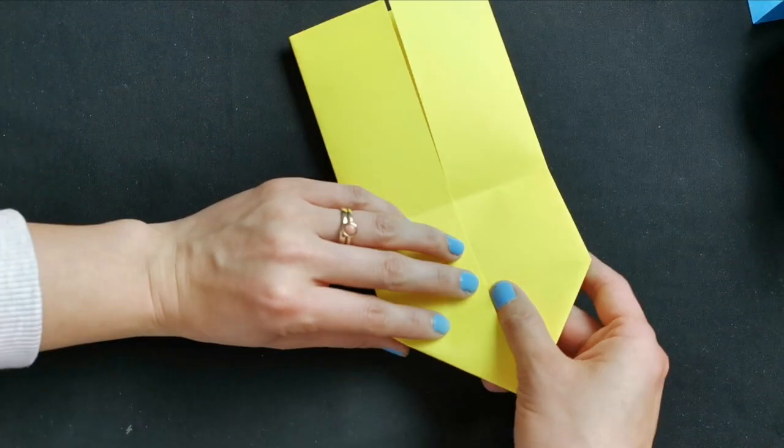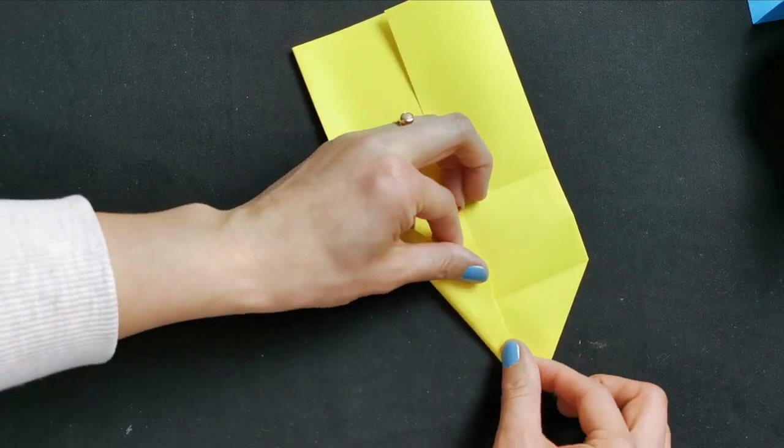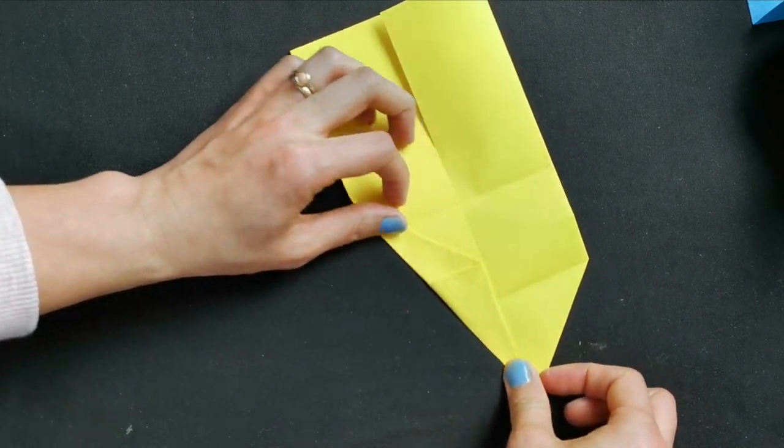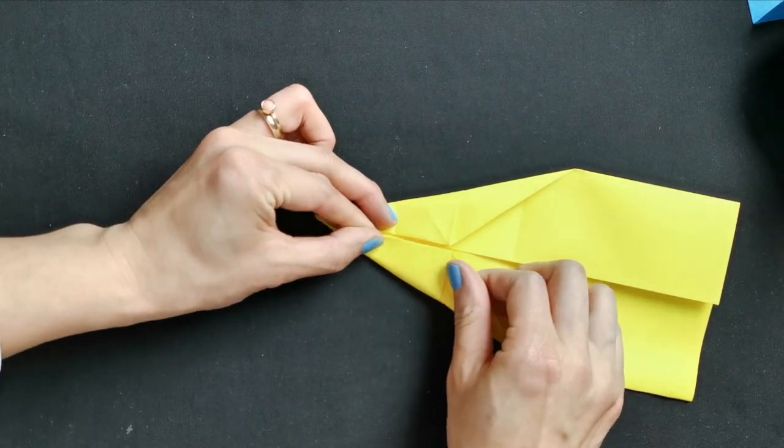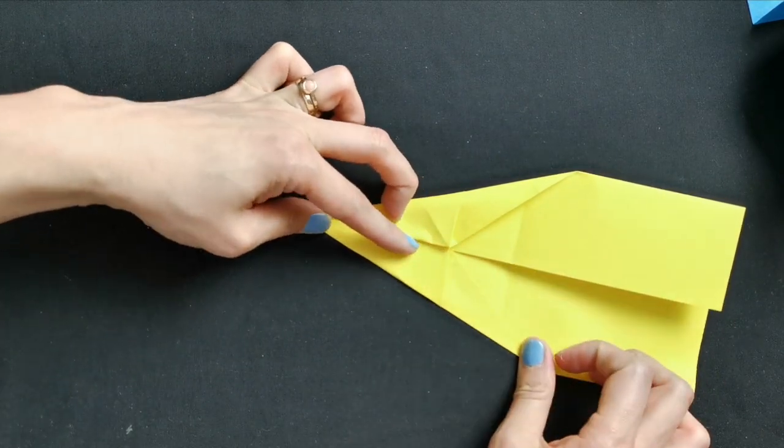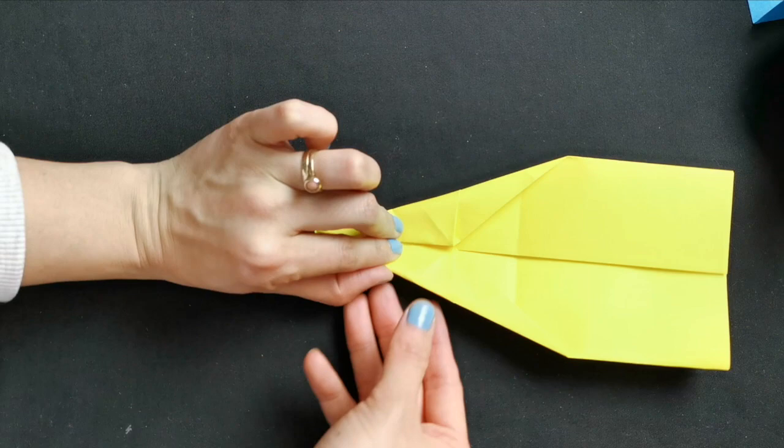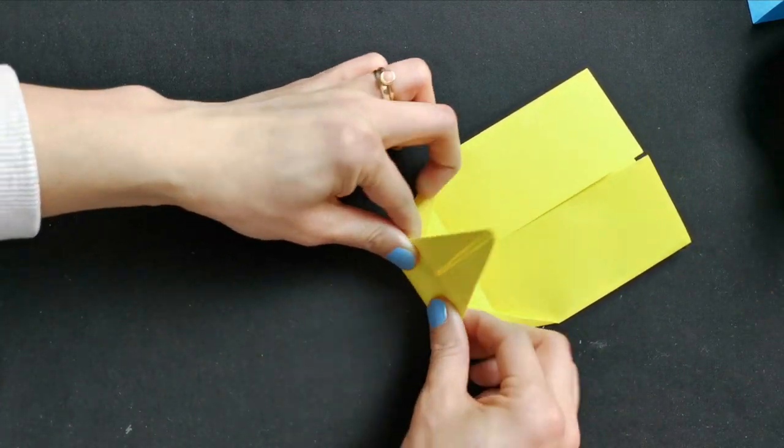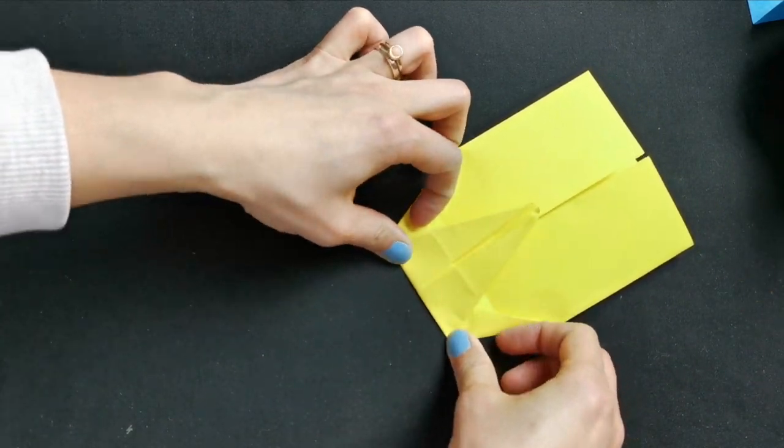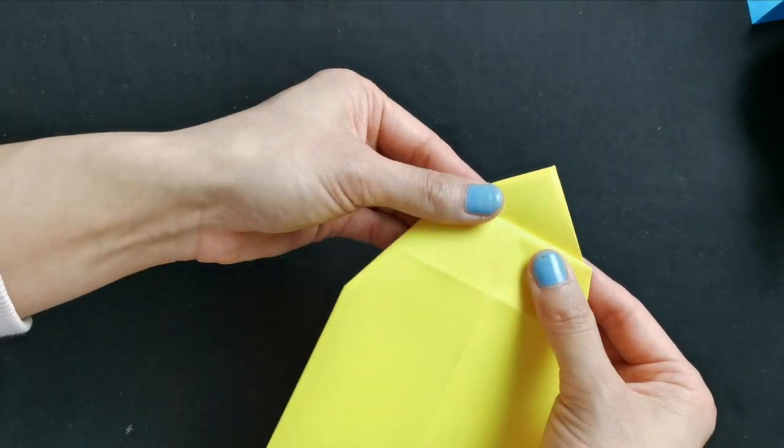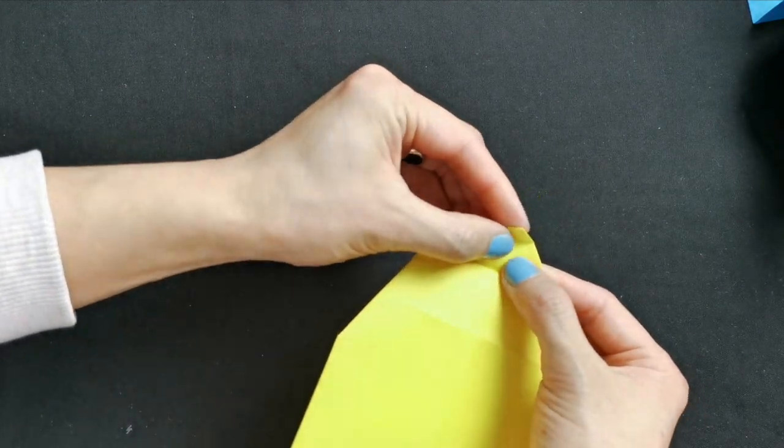Turn around, fold along this middle line. Then we fold this triangle up so create a little triangle to be the face.